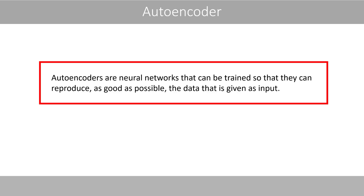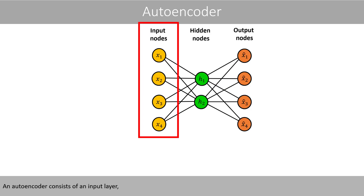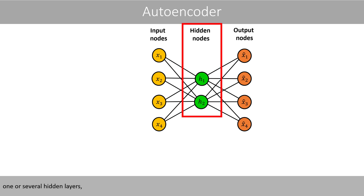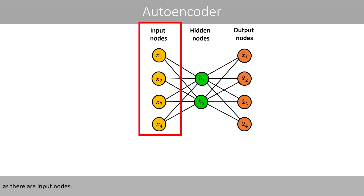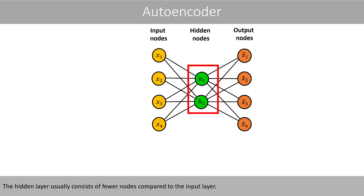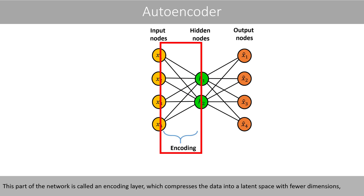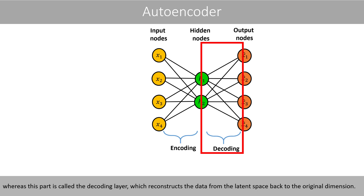Autoencoders are neural networks that can be trained so that they can reproduce as good as possible the data that is given as input. An autoencoder consists of an input layer, one or several hidden layers, and one output layer that has the same number of nodes as there are input nodes. The hidden layer usually consists of fewer nodes compared to the input layer. This part of the network is called an encoding layer, which compresses the data into a latent space with fewer dimensions, whereas this part is called the decoding layer, which reconstructs the data from the latent space back to the original dimension.